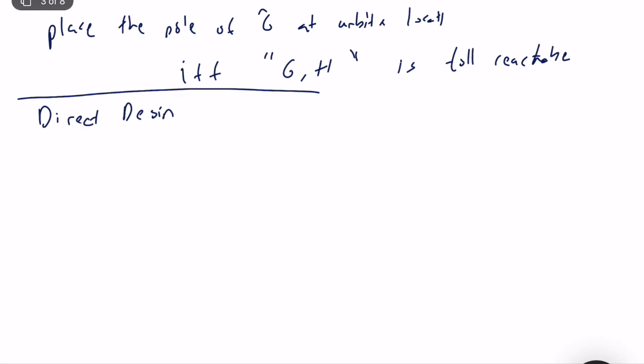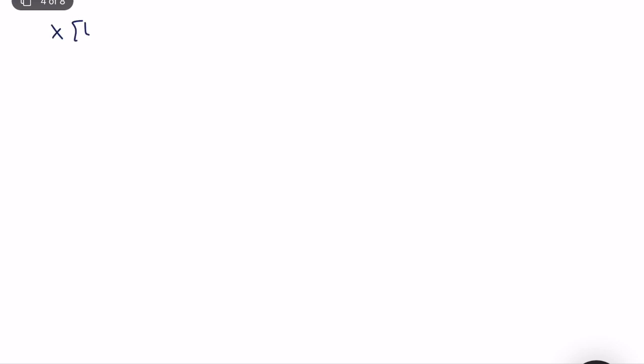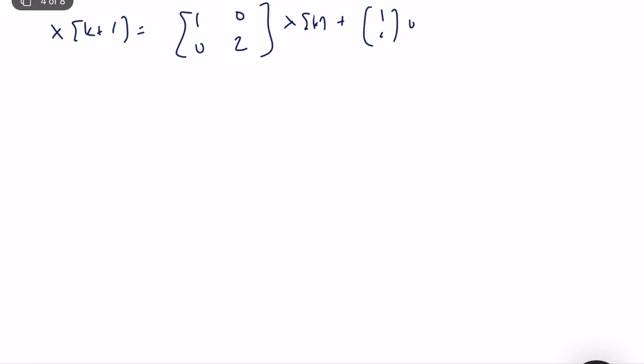Let's start with an example. The system is: x(k+1) = [1, 0; 0, 2]·x(k) + [1; 1]·u(k). As you can see, λ₁ = 1 and λ₂ = 2. One pole is on the unit circle and one is outside the unit circle, so the system is unstable.